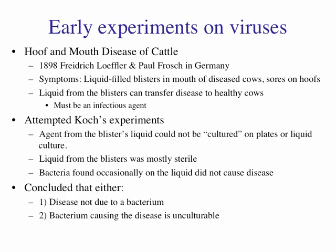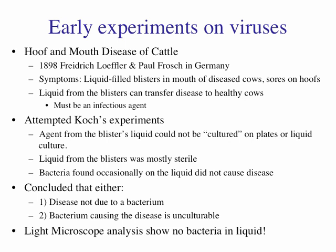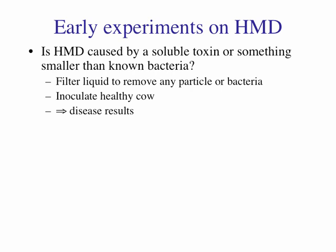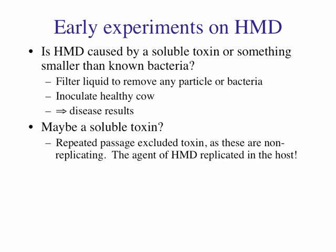They were trying to figure out how to apply Koch's postulates: take it from a diseased cow, put it in a new one, get disease, but cannot culture this. Their conclusions were: the disease may not be due to a bacterium, or it's a bacterium we cannot culture. When they looked under the microscope in 1898, they couldn't see anything. They thought maybe there is a toxin involved — some bacteria produce toxins causing disease, or something much smaller than bacteria.